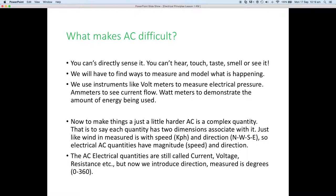So we have to find ways to measure and model what is happening. The way we measure it is we use instruments like voltmeters to measure electrical pressure or voltage. We use ammeters to actually see what the current flow is. You can't put your hand on the wire and feel the electrons running through the wire, so we need an ammeter to show us what the flow is. We use things like wattmeters to demonstrate the amount of electrical energy that is being used.